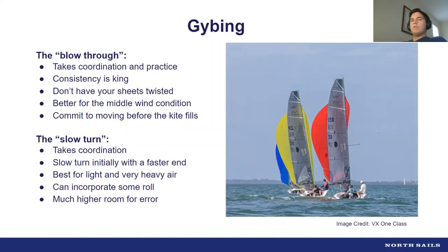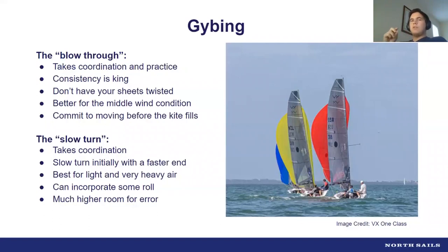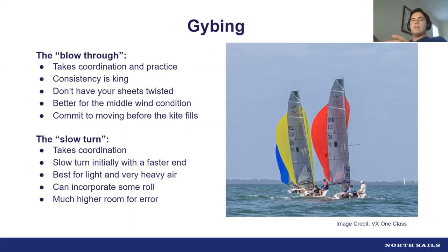Starting with jibing in the VX — there are two kinds. First, the blow-through, which is like the holy grail of jibing. Everyone has slightly different opinions on how it should be done, how much you should backwind, and the choreography involved. Then there's the slow turn jibe, which works 95% of the time in almost all breezes. Each has benefits in certain conditions — lighter air for one, heavier air for the other.